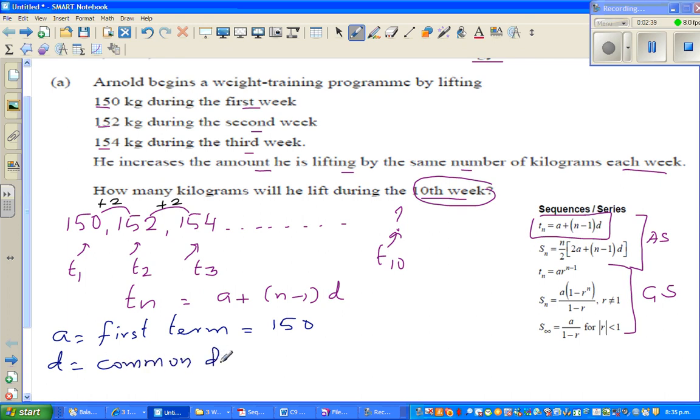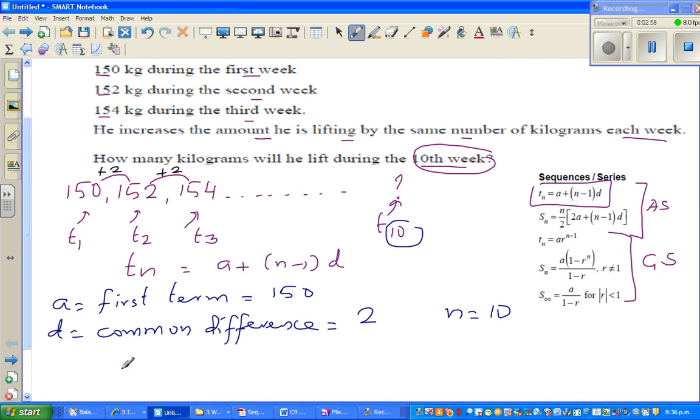The difference between two terms, any two terms, the difference is constant and that's why it's called a common difference which is plus 2. And we want to find t10 so we know n is 10. Let me write the formula. In place of n I'm going to put 10, in place of a I'm going to put 150, and in place of d I'm going to put 2.